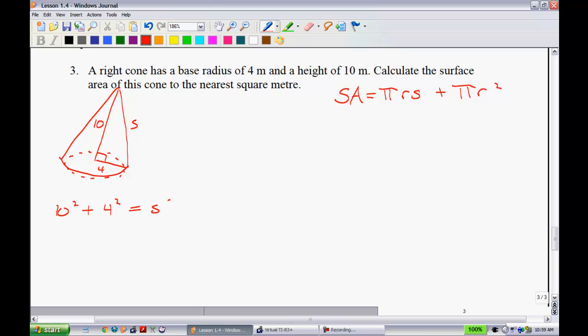10 squared is 100. Plus 4 squared is 16. That gives you 116 equals S squared, or S equals the square root of 116. Recall, I do not want you to...